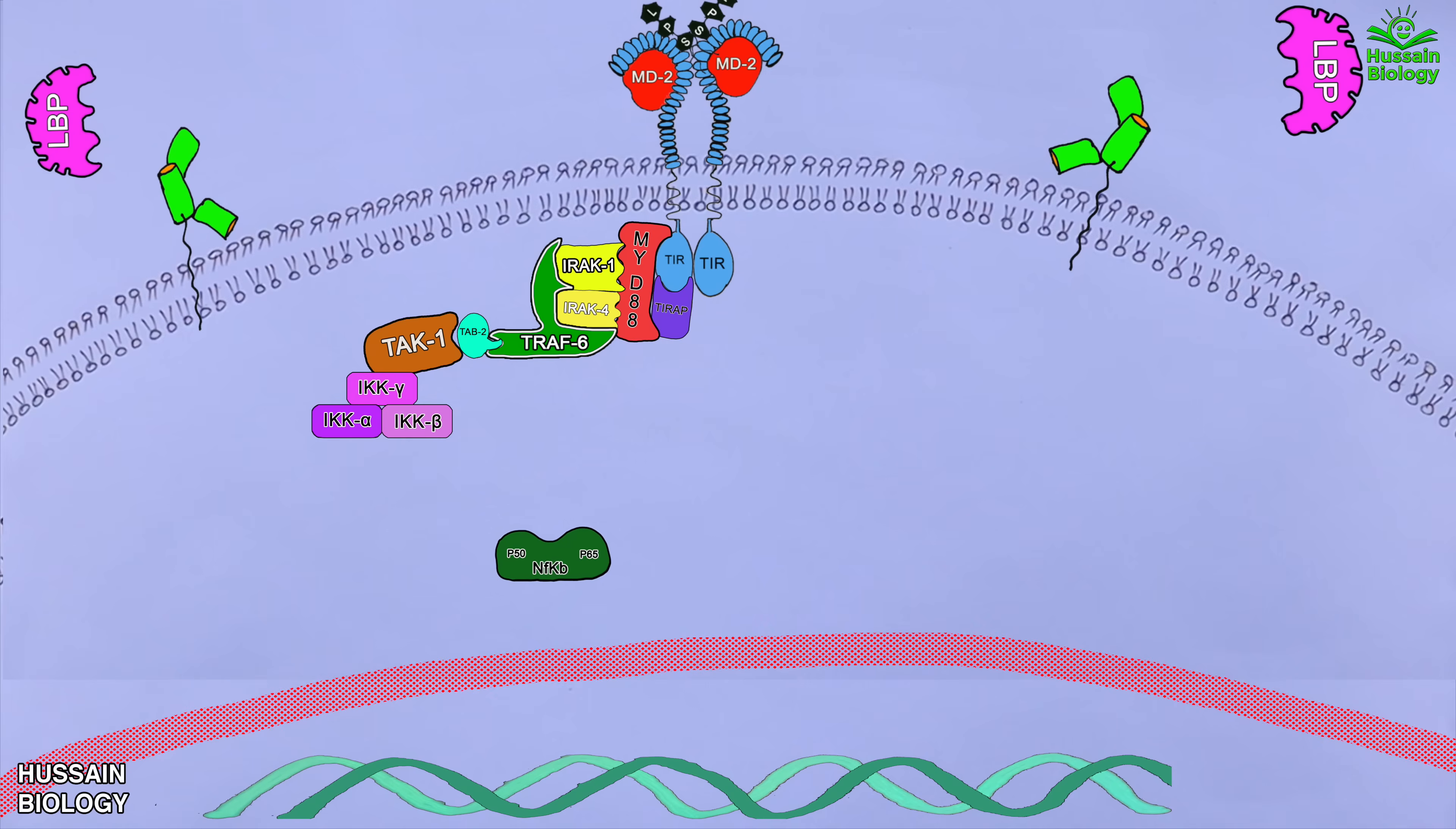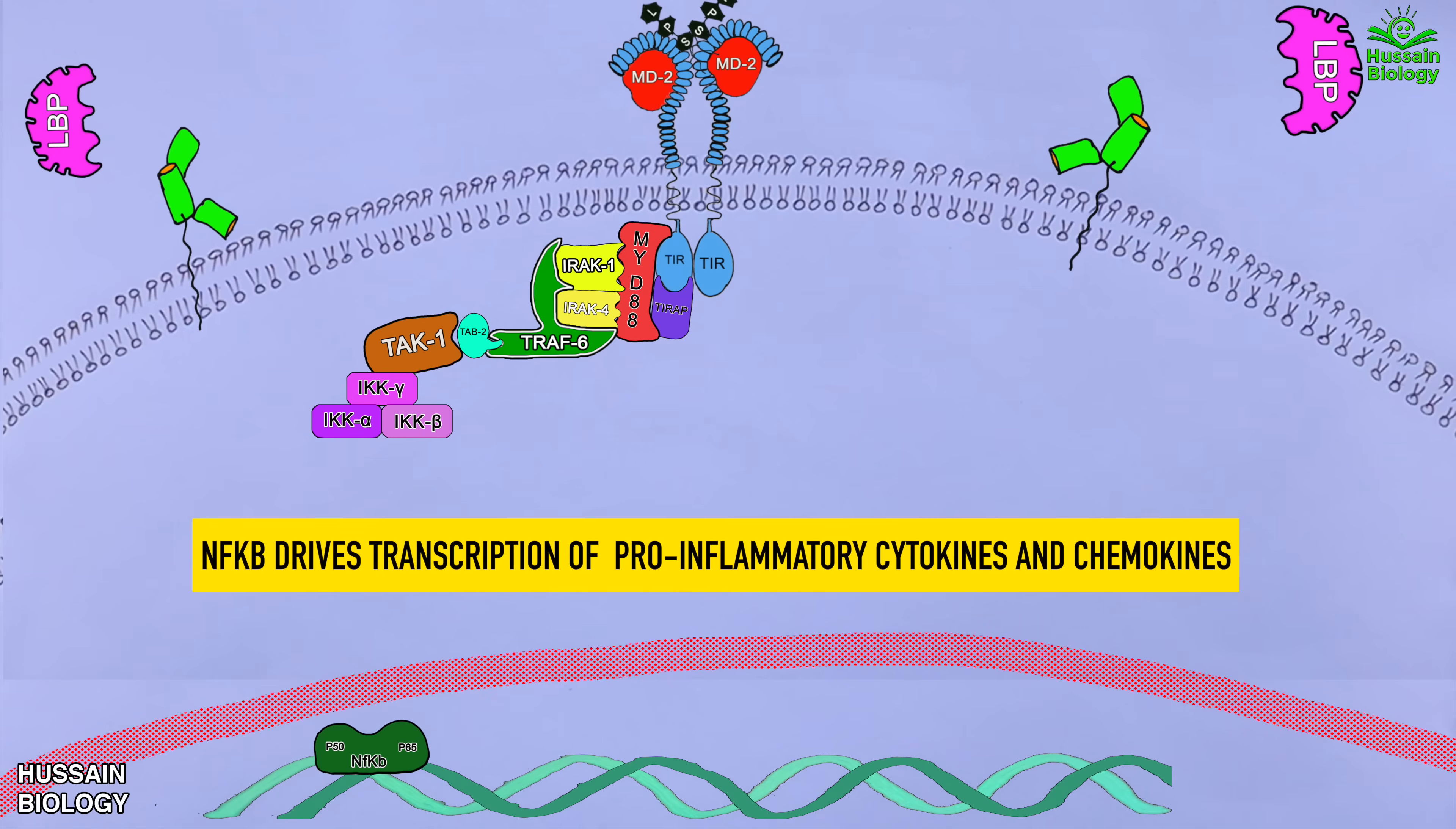And here we can see the NFKB moves into the nucleus and on DNA it drives the transcription of genes that produce pro-inflammatory cytokines and chemokines. So we can say NFKB acts as a transcription factor.